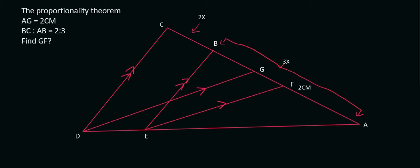Here is another proportionality question. So there's just some important things first. They have told us in the question that AG, from A to G, is 2 centimeters. Then they tell us that BC, which is over here, to AB, which is this whole length from here to here, is 2 to 3. But that's a ratio, so that's why I've used X's over there.